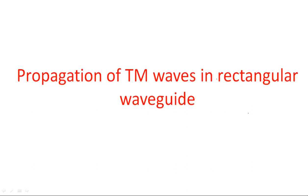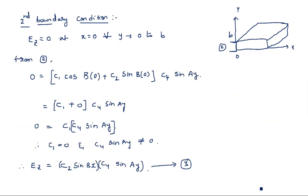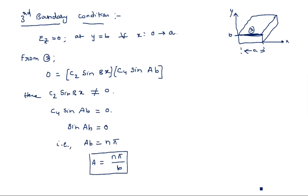From the last two videos I have been explaining the derivation of propagation of TM waves in rectangular waveguide. We have obtained boundary conditions 1, 2, and 3 in the previous video. Whatever boundary conditions we obtained need to be substituted in the latest equation. The constants are going to be evaluated one by one — from the third boundary condition we obtained the equation for A, and from the fourth we will obtain the equation for B.